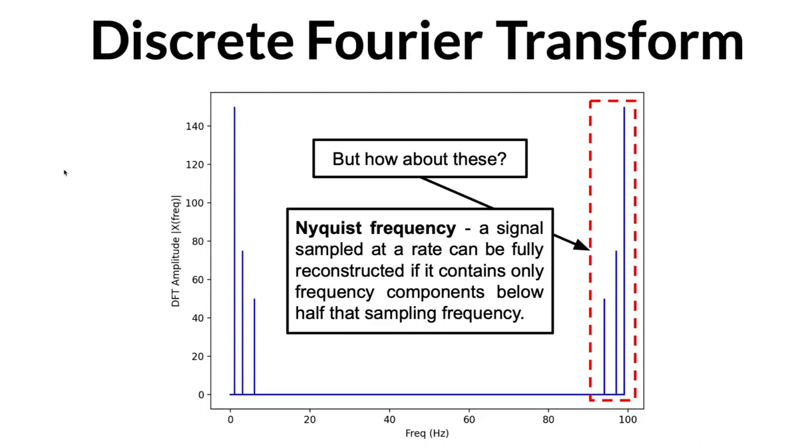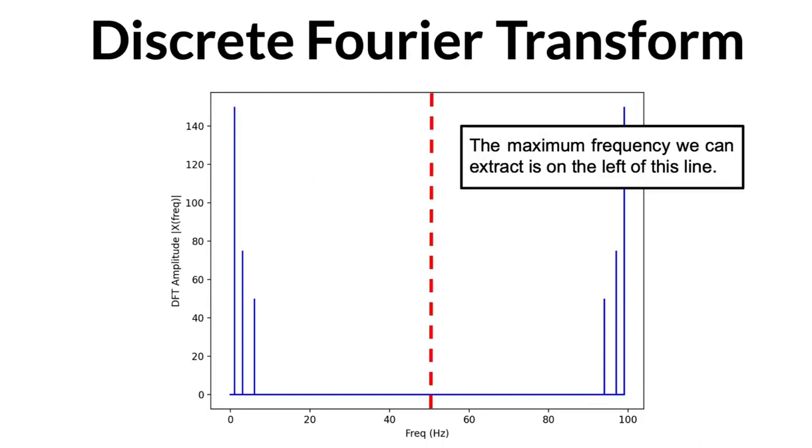He and Claude Shannon have the Nyquist-Shannon sampling theorem, which states that a signal sampled at a rate can be fully reconstructed if it contains only frequency components below half the sampling frequency. Thus, the highest frequency output from the discrete Fourier transform is half the sampling rate of our input signal.